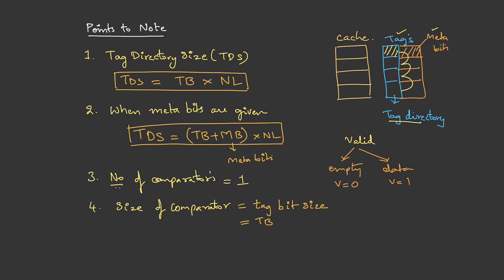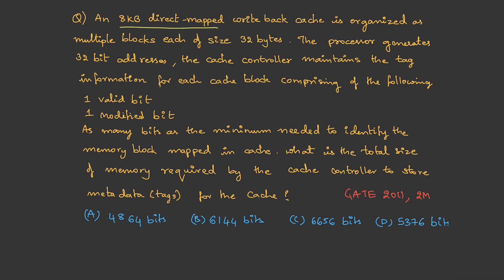Now let's try one more question. An 8KB direct-mapped write-back cache is organized as multiple blocks, each of size 32 bytes. The processor generates 32-bit addresses. The cache controller maintains the tag information for each cache block comprising of the following: valid bit, modified bit, and as many bits as minimum needed to identify the memory block. What is the total size of the memory required by the cache controller to store the metadata? Basically, they are asking the tag directory size.